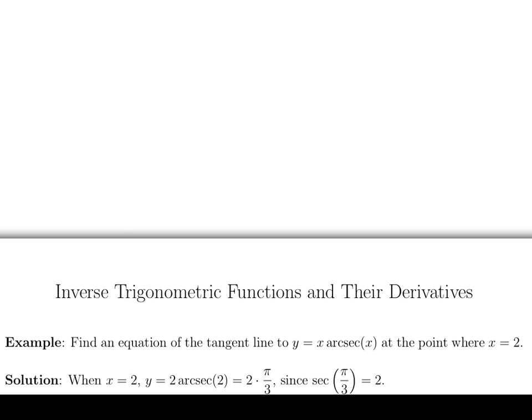Alright, so we've got our y-value. It's right here. It's 2 pi over 3. Now we're going to find the slope by calculating the derivative.